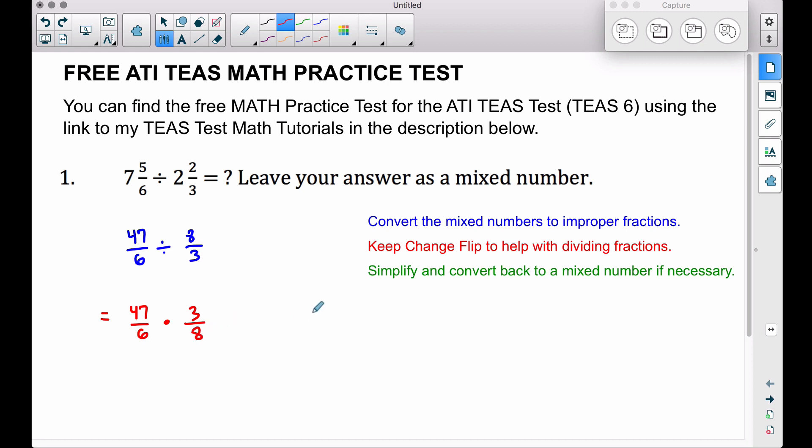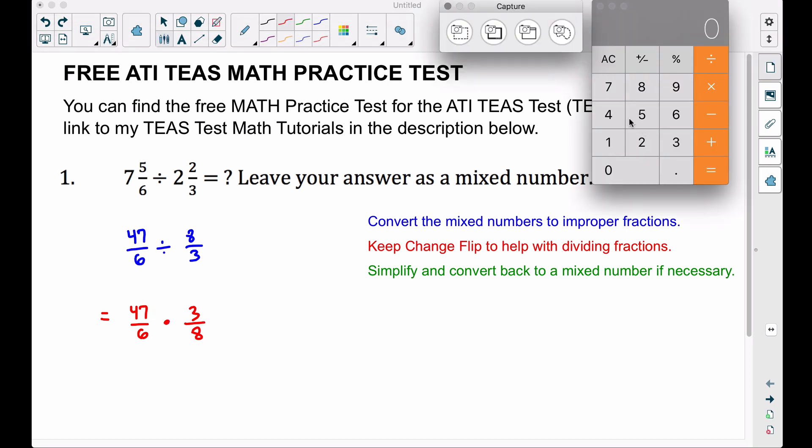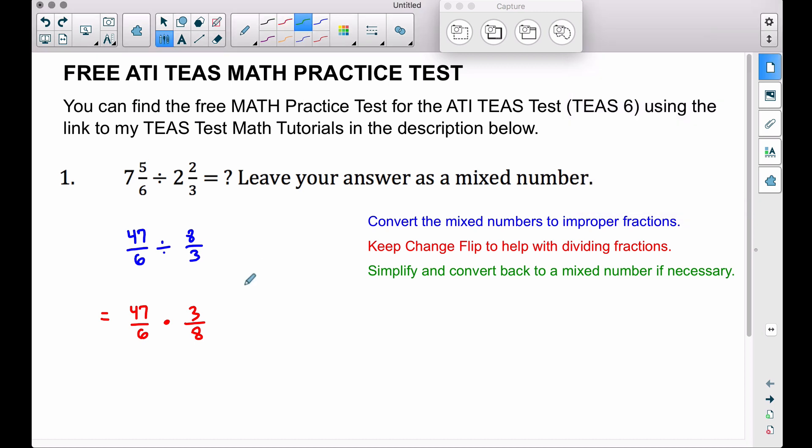Since we can use a calculator on the TEAS test, let's just go ahead and multiply these two fractions. We take top times top, bottom times bottom. So 47 times 3, we're multiplying those two numerators together, we have 141. Now sure here you could do some simplifying before that, but since we can have a calculator and we're all about speed on the TEAS test, 47 times 3 is 141.